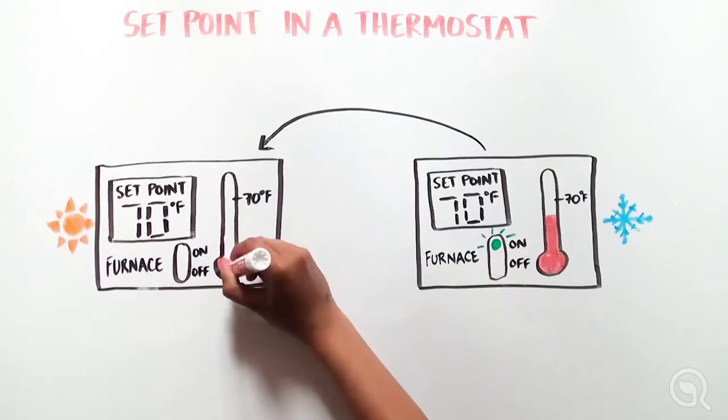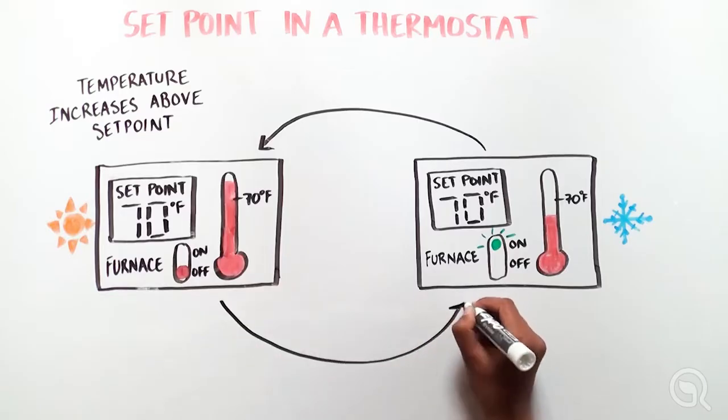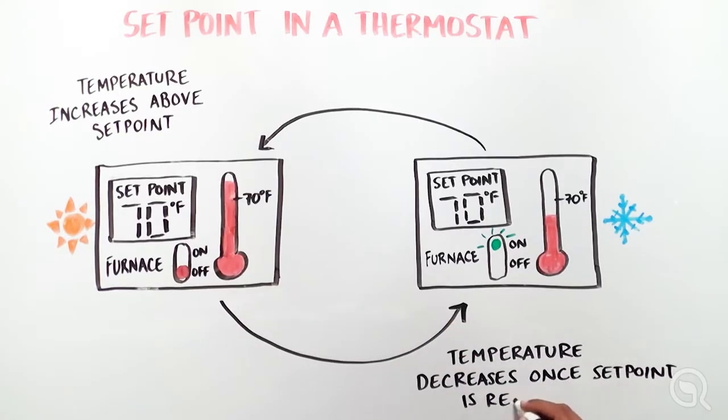When the furnace heats the house to the desired temperature, your set point or above, the furnace shuts off to cool the house back down. This is a constant back and forth process to ensure the desired temperature is always maintained. But how does this process work in the body? Let's take a closer look.